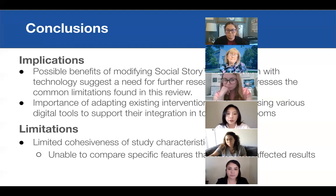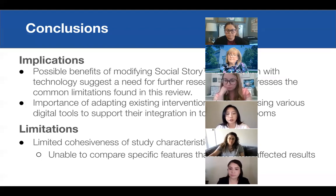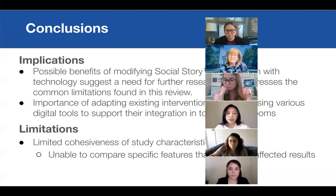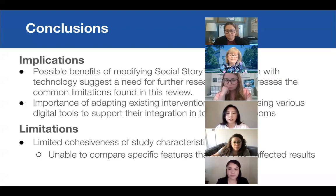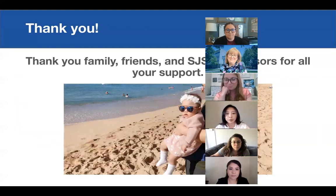Limitations for the systematic review came from the specificity of the research question, which led to a relatively small number of articles selected. The articles brought a variety of characteristics, and the limited cohesiveness of the studies did not allow for further comparison of features that may have affected results, such as study settings, types of intervention training, and how technology was used to create and deliver interventions. That's the end of my presentation.